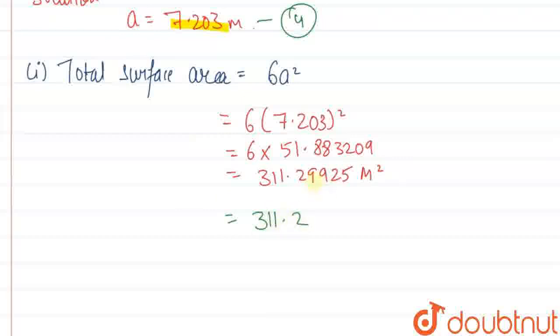And when we round off this, then this is 9, which is greater than 5, so 2 will increase by 1. So the final answer will be 311.3 meter square.